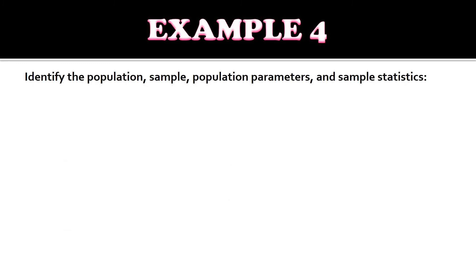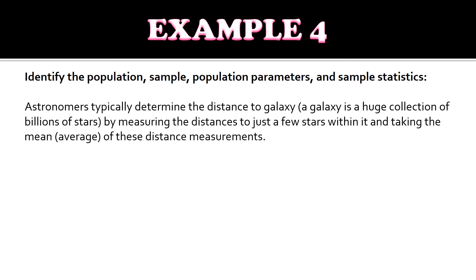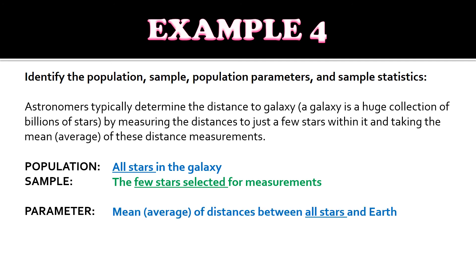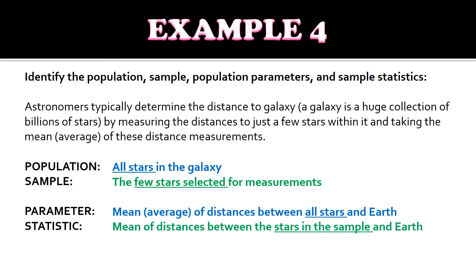Sample number four: astronomers typically determine the distance to a galaxy — a huge collection of billions of stars — by measuring the distances to just a few stars within it and taking the mean of these distance measurements. The population is all stars in the galaxy. The sample is the few stars selected for measurement. The parameter is the average distance between all stars and the earth. And the statistic is the mean distance between the stars in the sample and the earth.